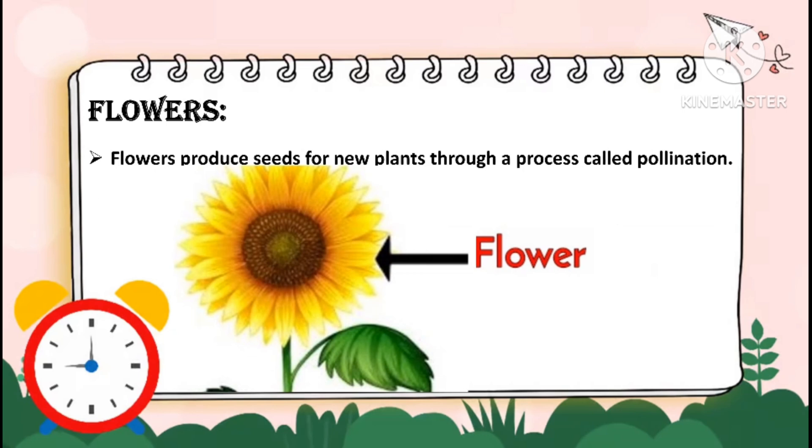Flowers. Flowers produce seeds for new plants through a process called pollination.